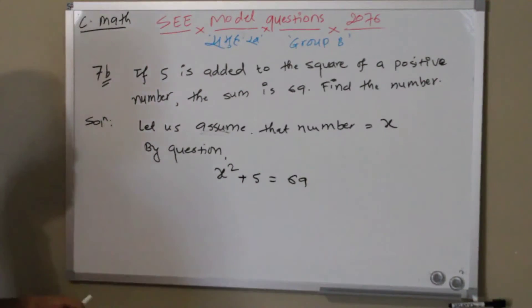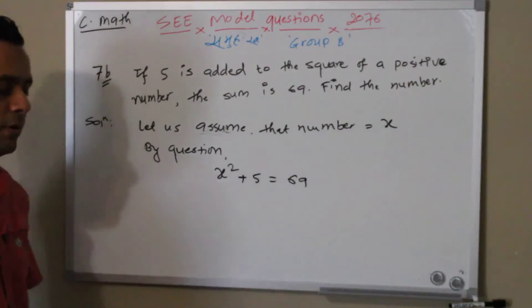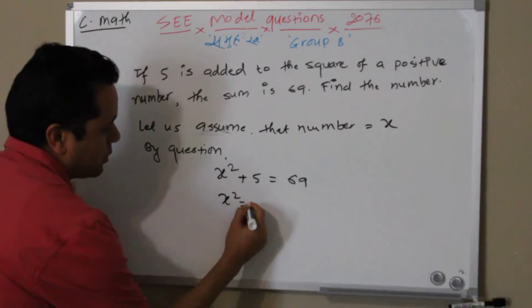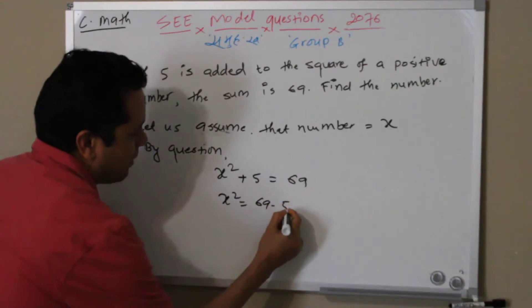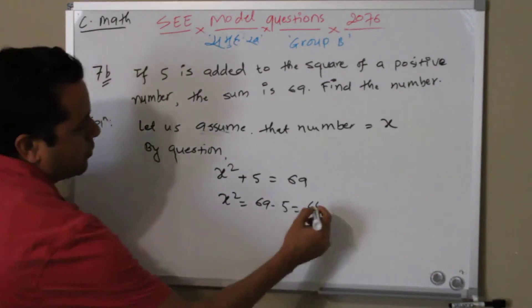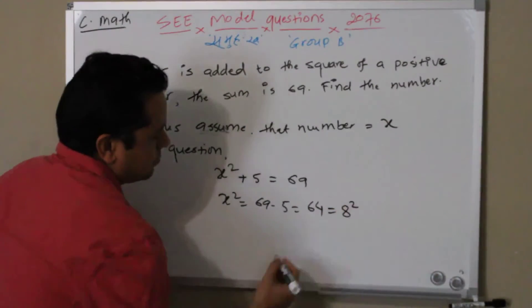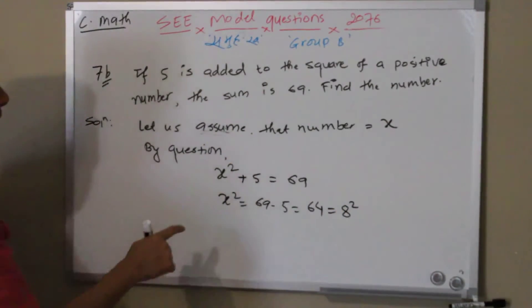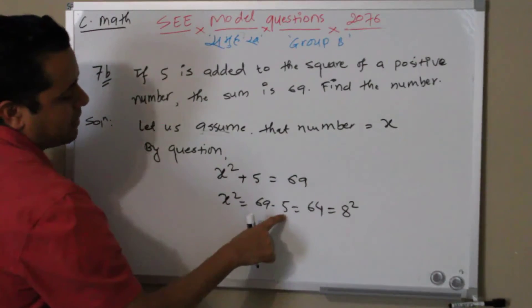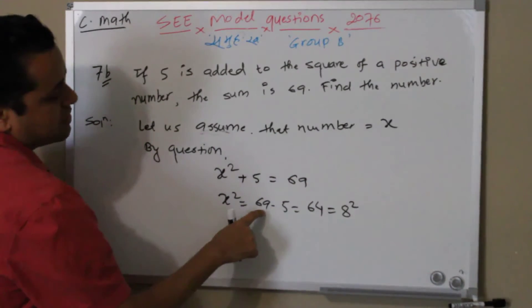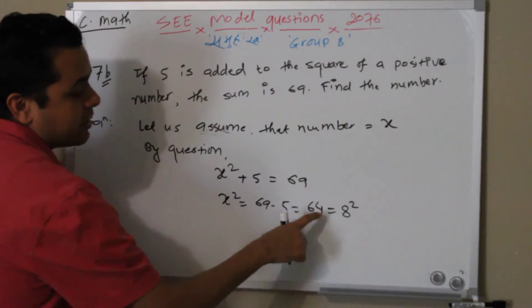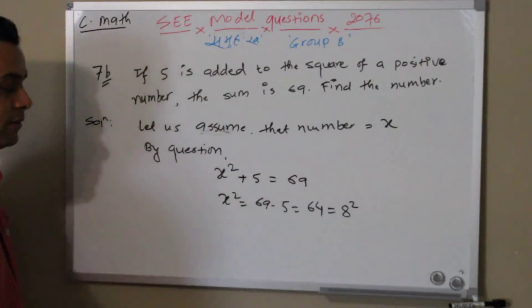Now we have to simplify to find that number. Taking 5 to the right side: x² = 69 − 5, which equals 64. And 64 is the square of 8.